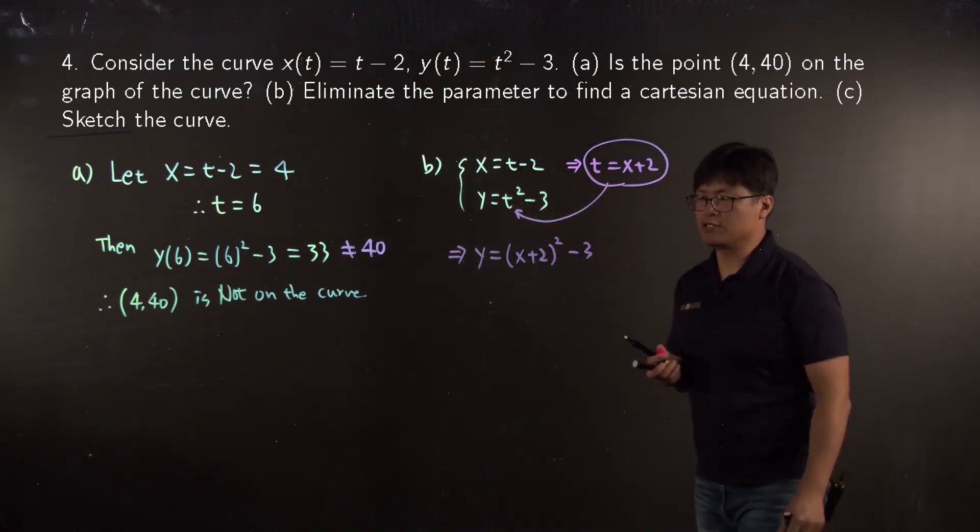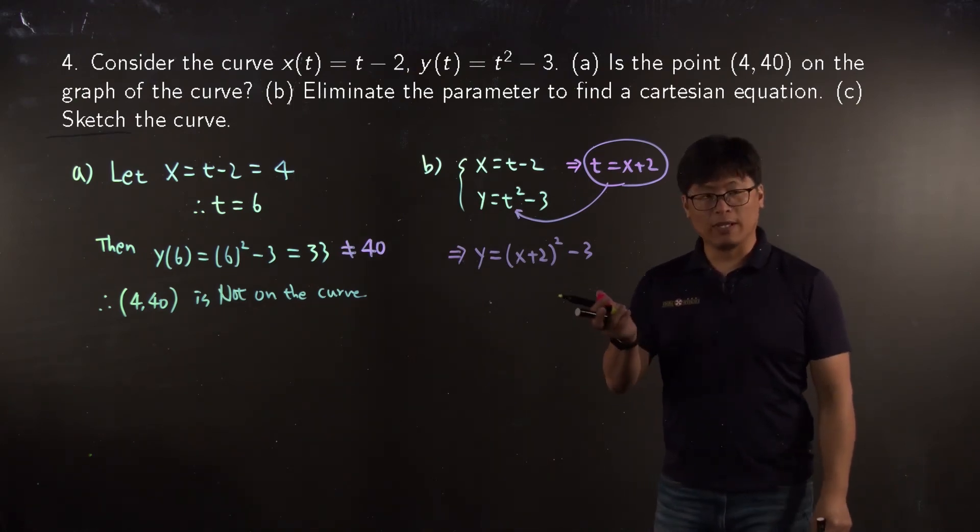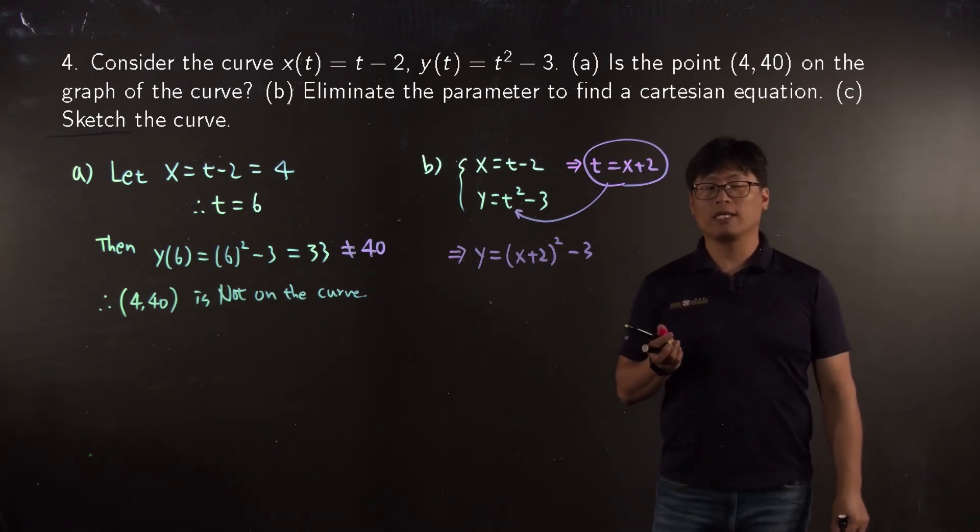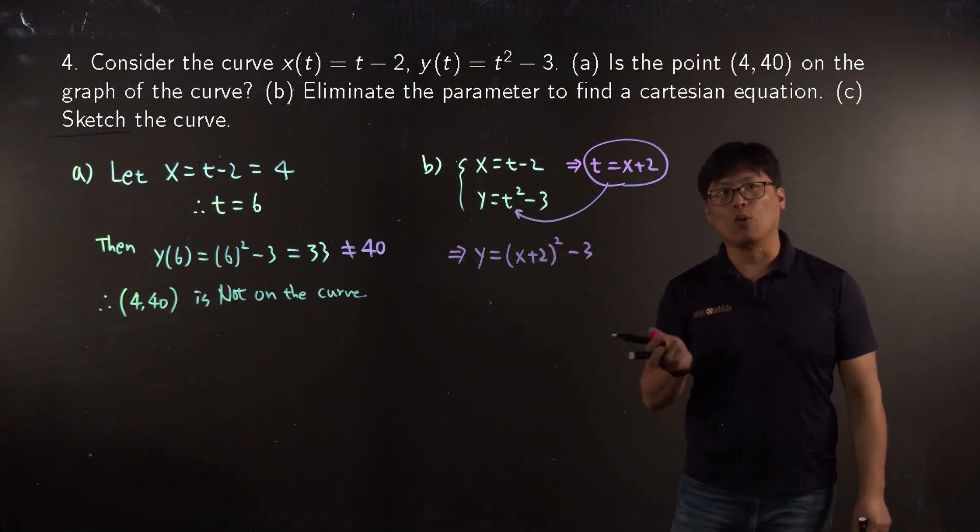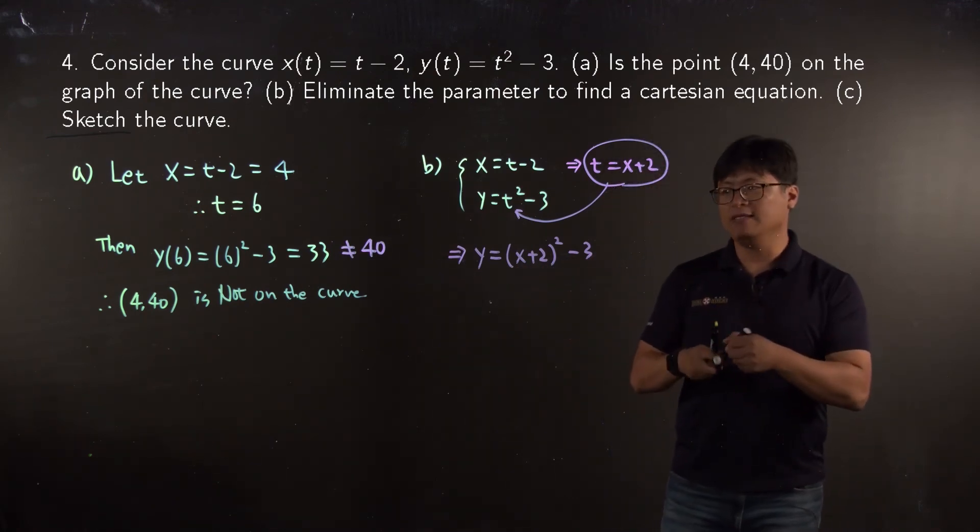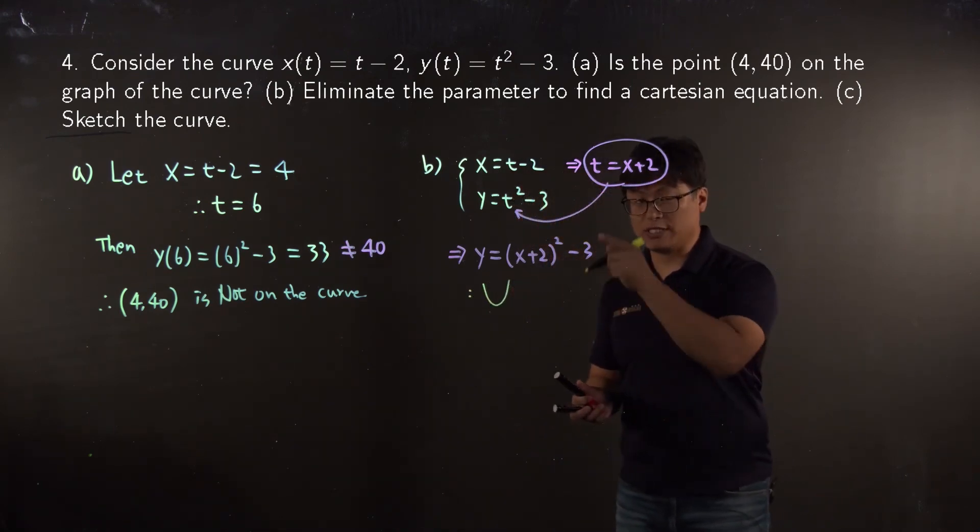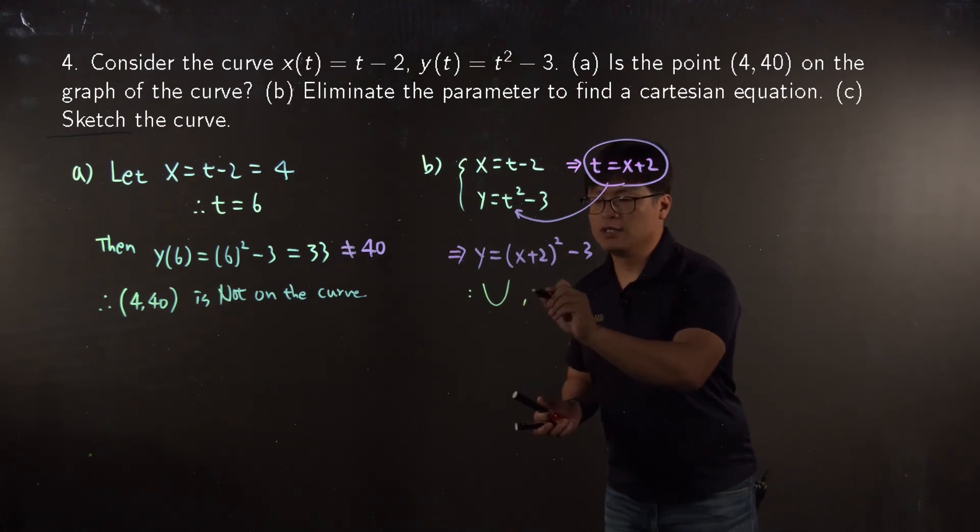This is the Cartesian form of your parametric equation. Now let's talk about this. That is a quadratic equation, which is smiley or sad face. Since your coefficient of x² is positive, it will be smiley face. And also we can easily find the vertex point because this is vertex form. So vertex is (-2, -3).